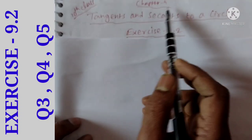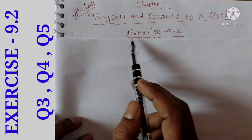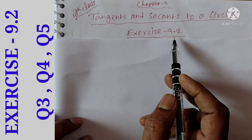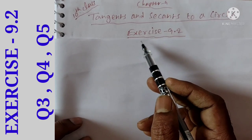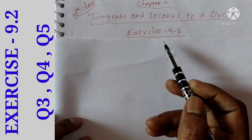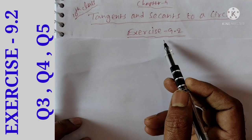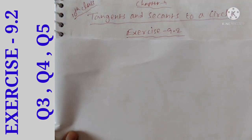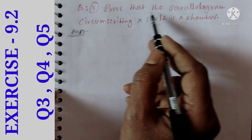10th class chapter 9, tangents and secants to a circle, exercise 9.2. We completed the first and second questions in our previous video. Now, question number 3.